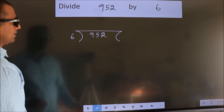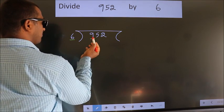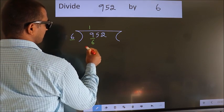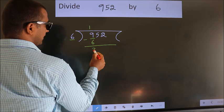Next, here we have 9, here 6. A number close to 9 in the 6 table is 6 times 1 is 6. Now we should subtract. We get 3.